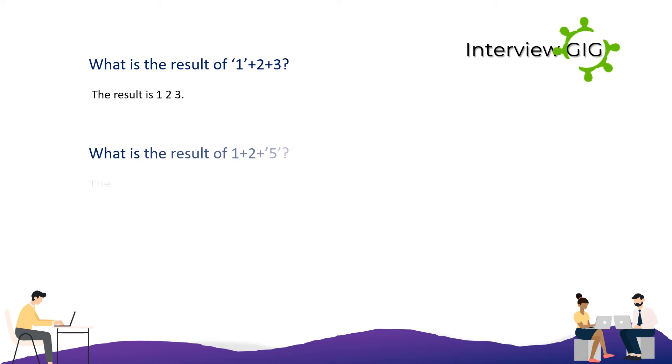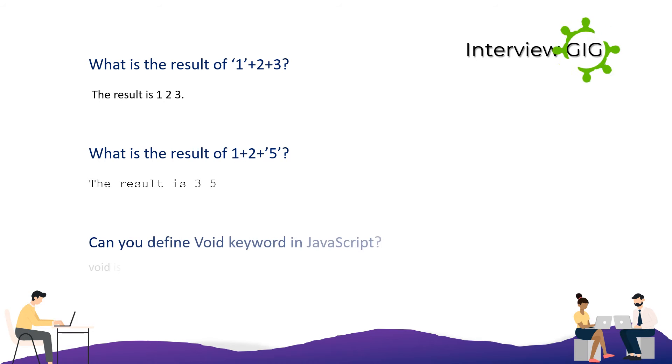What is the result of 1 + 2 + 5? The result is 35. Can you define the void keyword in JavaScript? Void is an important keyword in JavaScript that can be used as a unary operator that appears before its single operand, which may be of any type.